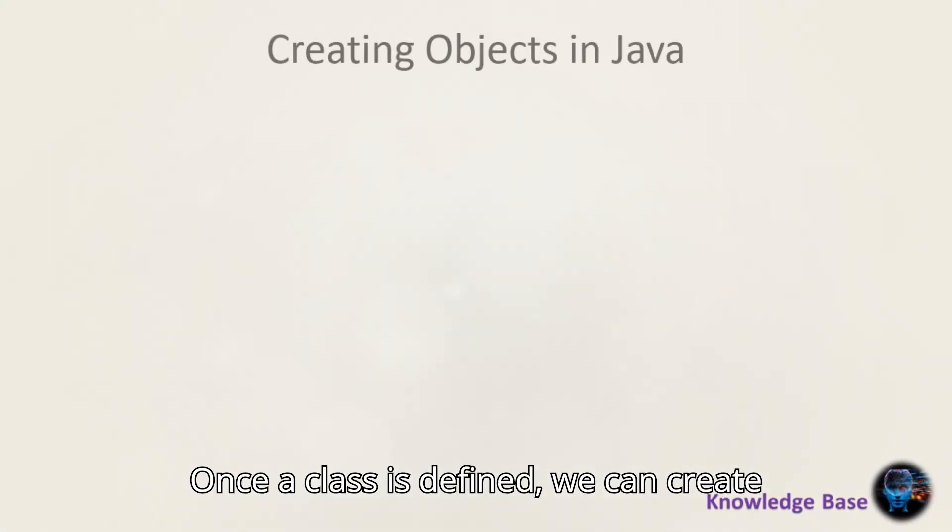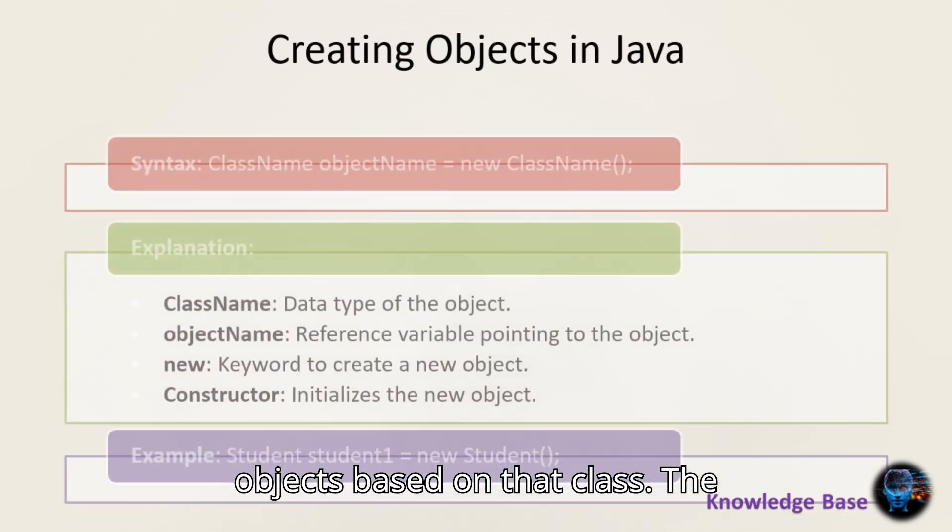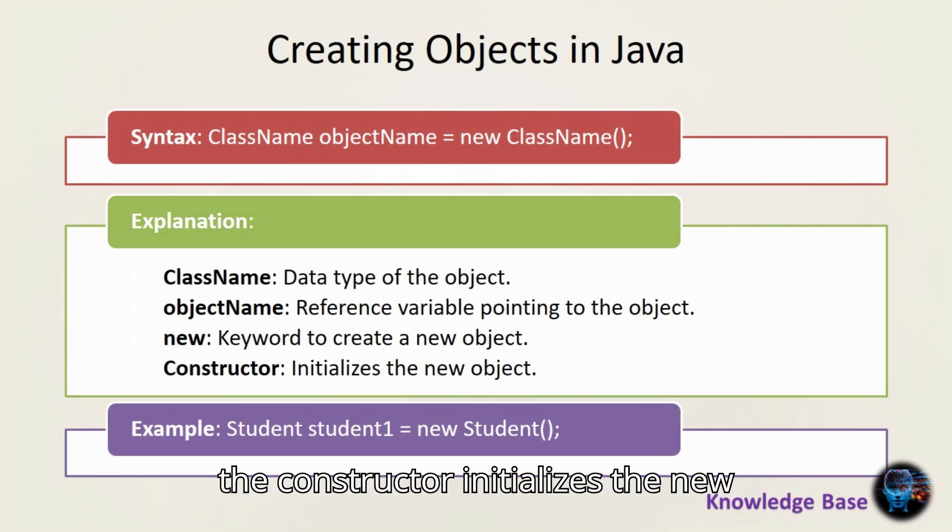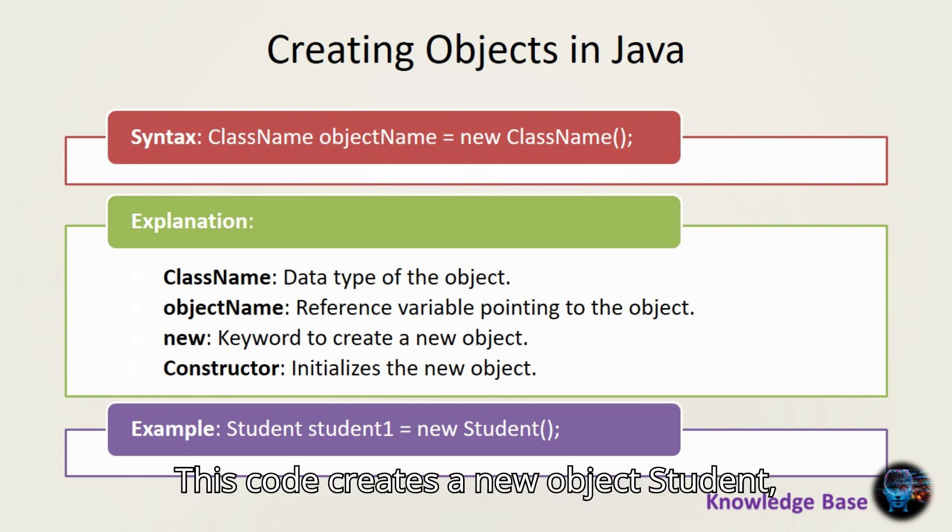Once a class is defined, we can create objects based on that class. The syntax for creating an object is: ClassName objectName equals new ClassName. Here, ClassName is the data type of the object, objectName is a reference variable pointing to the object, new is the keyword used to create a new object, and the constructor initializes the new object. For example, Student student1 equals new Student. This code creates a new object student1 of the class Student.